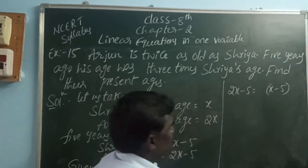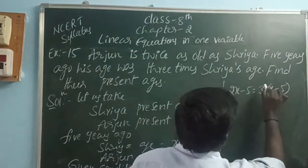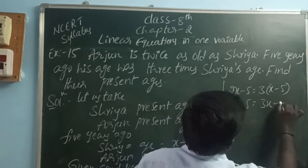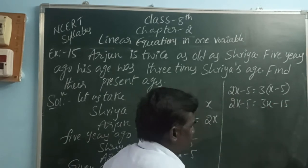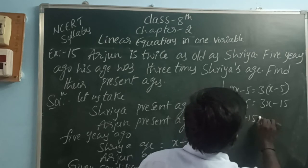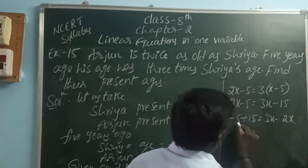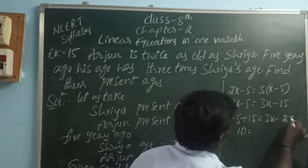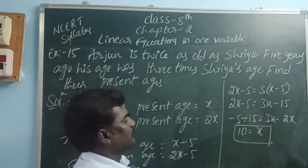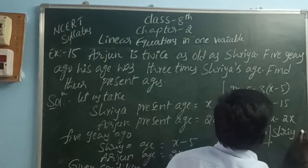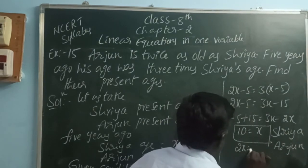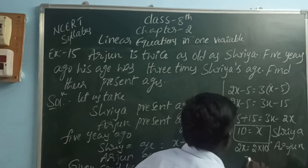So 2x minus 5 equals 3(x minus 5), which gives 2x minus 5 equals 3x minus 15. Taking variable terms on one side and constants on the other: minus 5 plus 15 equals 3x minus 2x, so 10 equals x. Sriya's age is 10 years, and Arjun's age is 2x equals 20 years.